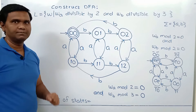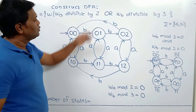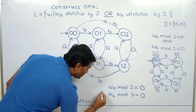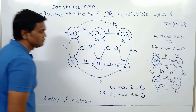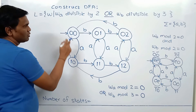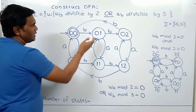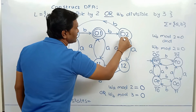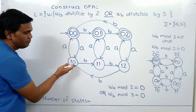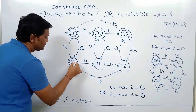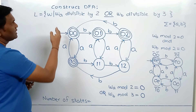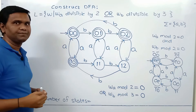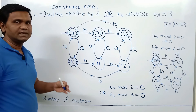Now let's consider variations. For the variation where number of A is divisible by 2 OR number of B is divisible by 3: number of A mod 2 should be 0 OR number of B mod 3 should be 0. We mark state (0,0) as final since both conditions hold. We also mark state (0,1) and (0,2) as final since number of A mod 2 is 0, and state (1,0) since number of B mod 3 is 0. This is the required DFA for the OR condition.